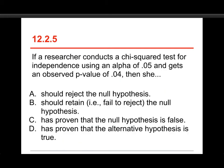All right, number five. If a researcher conducts a chi-squared test for independence using an alpha of 0.05 and gets an observed p-value of 0.04, then she should reject the null hypothesis, should retain or fail to reject the null hypothesis, has proven that the null hypothesis is false, or has proven that the alternative hypothesis is true. Well, in this case, remember we had one before where the alpha was 0.01 and the observed p-value was 0.04. In that case we retained the null hypothesis because our observed p-value was bigger than our alpha value or sort of our criterion.